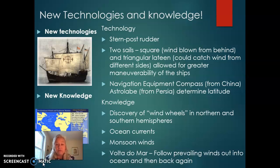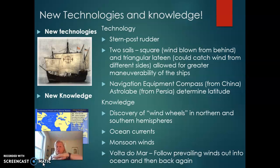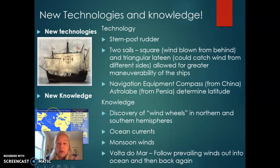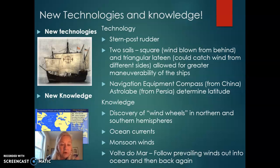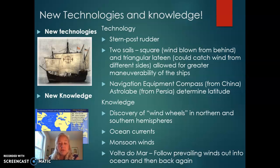We have the south-pointing compass that came from China. The astrolabe is a device that helps determine latitude — this comes from Persia. Latitude are the lines that go from the equator up and down. Longitude lines — a way to measure that — will not be discovered until the 19th century. Two really important developments also occurred: the discovery of wind wheels in both the northern and southern hemispheres, meaning that wind moves in a predictable pattern in both hemispheres.